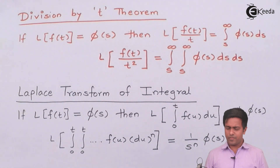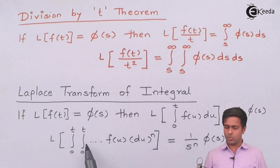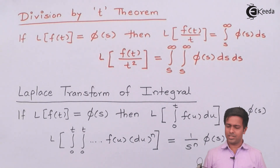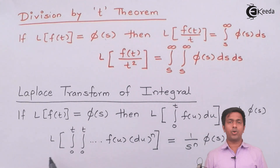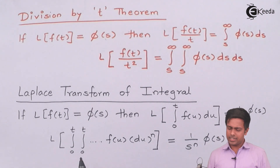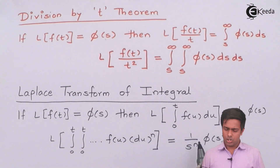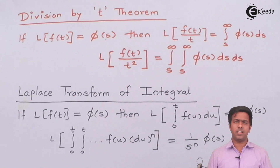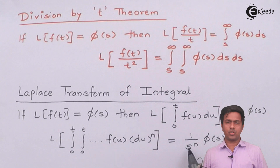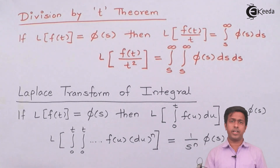Sometimes we get double or triple integrals, so in such cases we use the formula (1/sⁿ)φ(s), where n denotes the number of times integration appears in the question. So if the question contains two or three integrations from 0 to t, we use s raised to the power equal to the number of integrals.